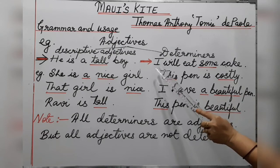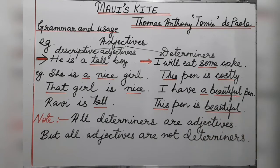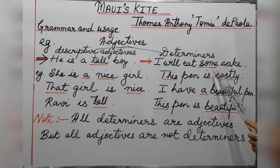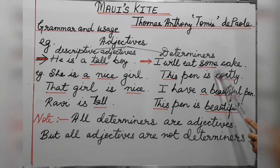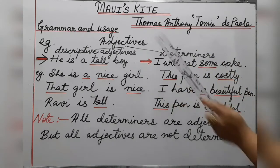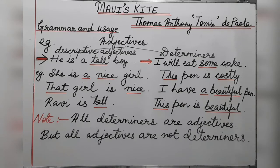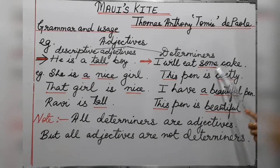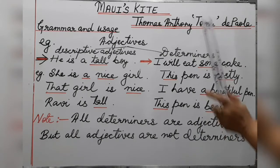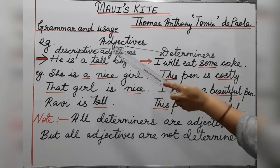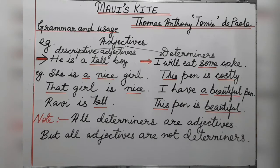For determiners, consider 'I will eat some cake.' Here 'cake' is the noun and 'some' is the determiner. The key difference is that 'some' cannot be changed — it has no comparative or superlative form. Whereas the adjective 'tall' can become 'taller' or 'tallest.' So when it is an adjective it can be changed, but when it is a determiner it cannot be changed.